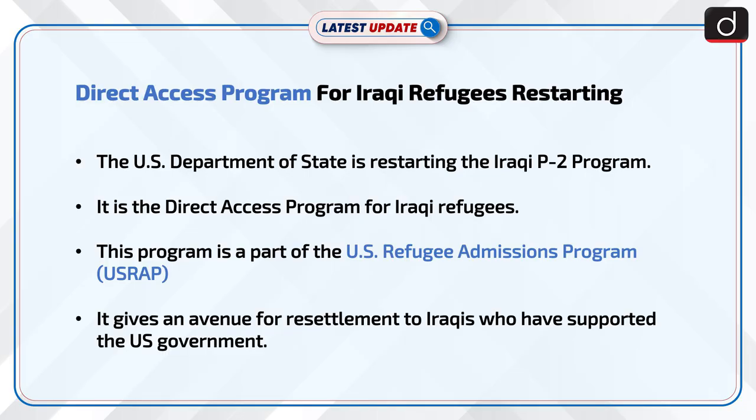The US Department of State is restarting the Iraqi P2 program — the direct access program for Iraqi refugees. This program is a part of the US Refugee Admissions Program (USRAP), and it gives an avenue for resettlement to Iraqis who have supported the US government.